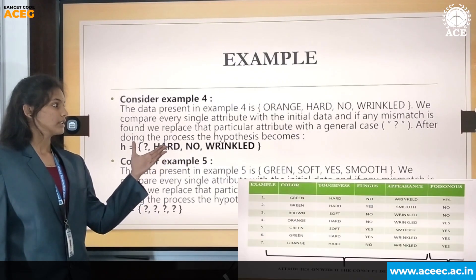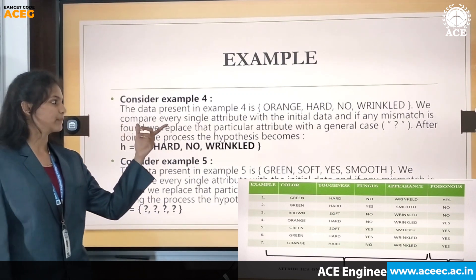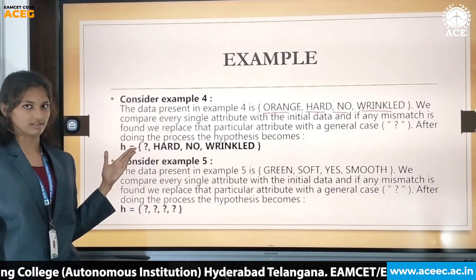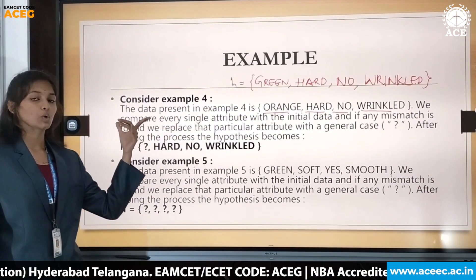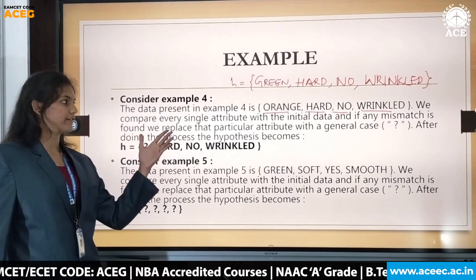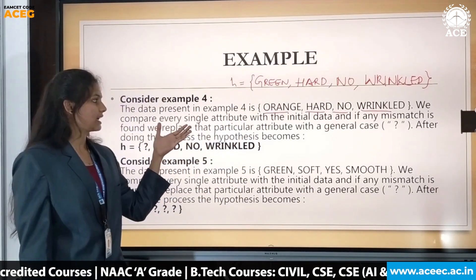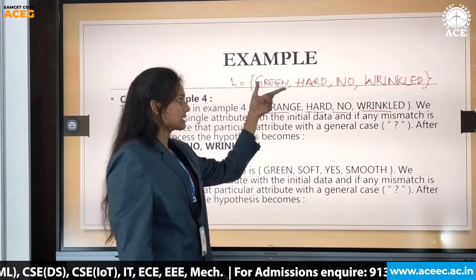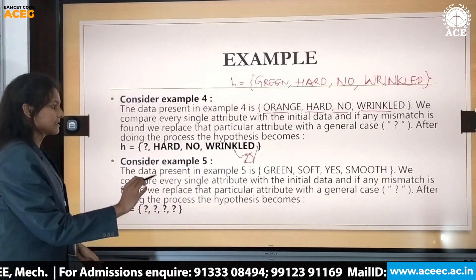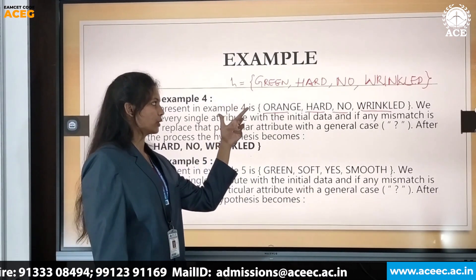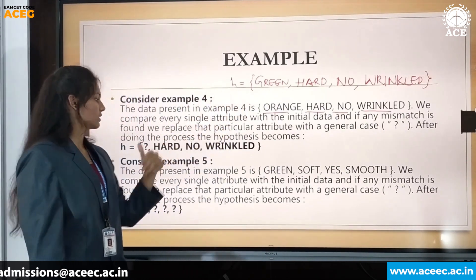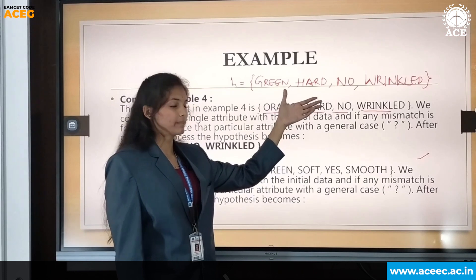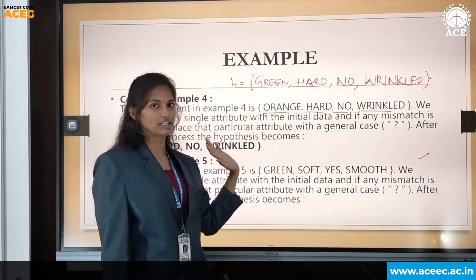In example four, the outcome is positive. The data is orange, hard, no, and wrinkled. We compare each attribute of this example with the current hypothesis {green, hard, no, wrinkled}. A mismatch is found between 'green' and 'orange', so we replace it with the general case symbol, question mark. The remaining attributes — hard, hard; no, no; wrinkled, wrinkled — all match, so there is no further change. The updated hypothesis becomes {?, hard, no, wrinkled}.